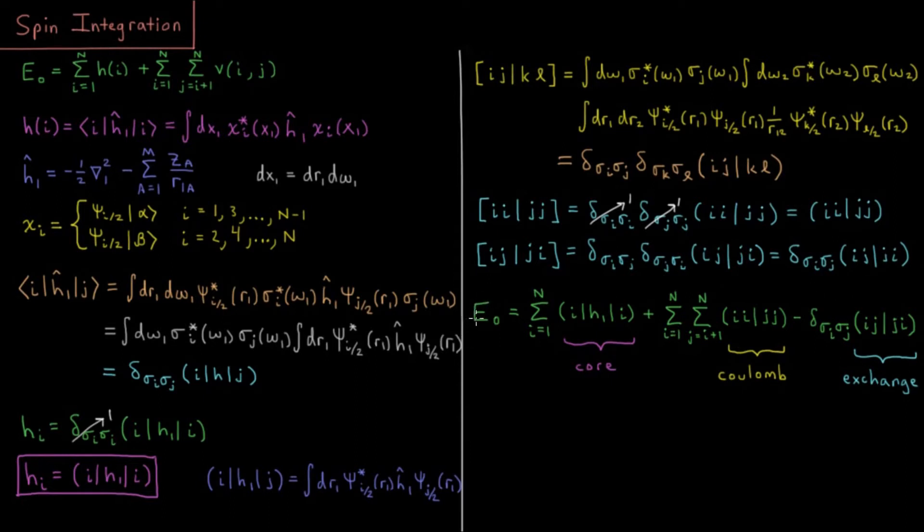So what we have, then, is our total energy of our Hartree-Fock ground state determinant is going to be a sum from i equals one of our spatial core integrals, plus a sum over all the pairs of electrons of the Coulomb integral minus the exchange integral if the spins of the two electrons are the same, or it's going to be zero if they're not. So two electrons that have the same spin will interact through a Coulomb and exchange integral, and two electrons of different spin will only interact through the Coulomb integral where their exchange interaction is going to be zero.